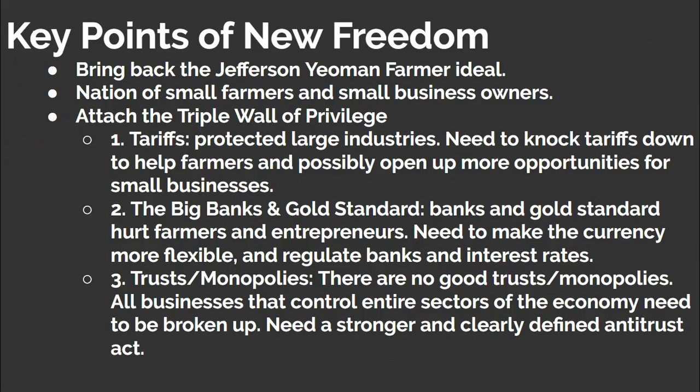Now let's look at the key details of Wilson's New Freedom. As a nod to the populist base of the Democratic Party, Wilson harkened back to Thomas Jefferson's yeoman farmer ideal. The Jeffersonian ideal holds that democracy works best at the local level, and the small farmer and small business owner are what should be emphasized and protected by the U.S. government. The government had for too long protected big business and banks over the interests of the individual, and Wilson argued that the government must attack this triple wall of privilege. The first thing Wilson called for was to cut tariffs, which were set up to protect big business but hurt farmers. Ending this protection may also create more competition and allow small businesses to compete with big businesses.